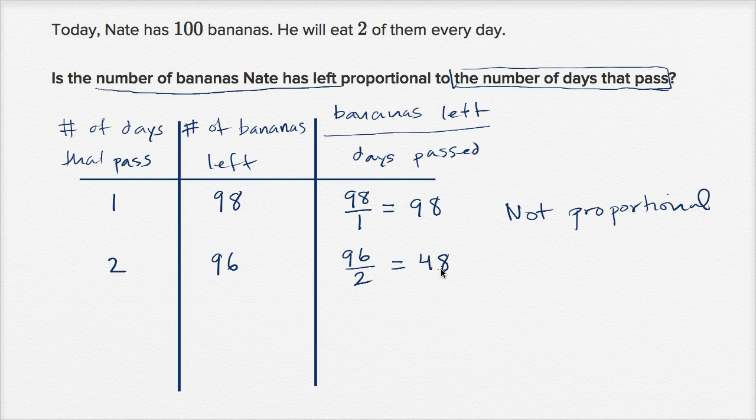Now things might have been a little bit different if they said the number of bananas Nate has eaten. Is that proportional to the number of days that passed? Well yeah, sure, because then if this was a number of bananas eaten, then it would always be two times the number of days that pass.